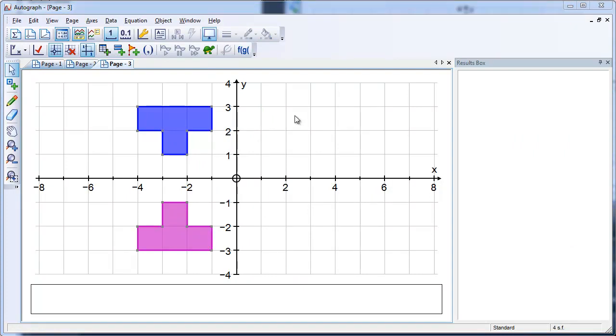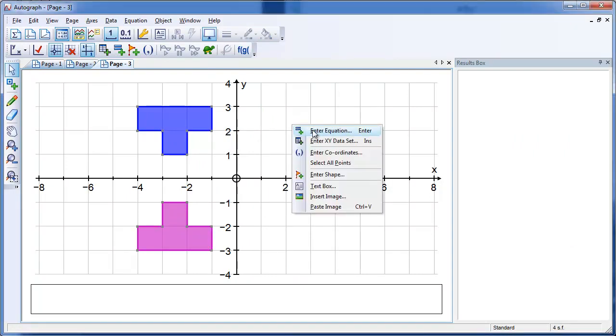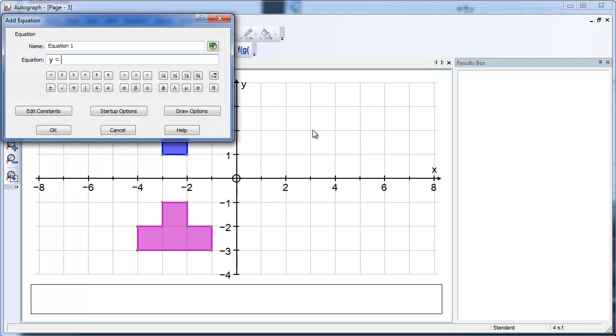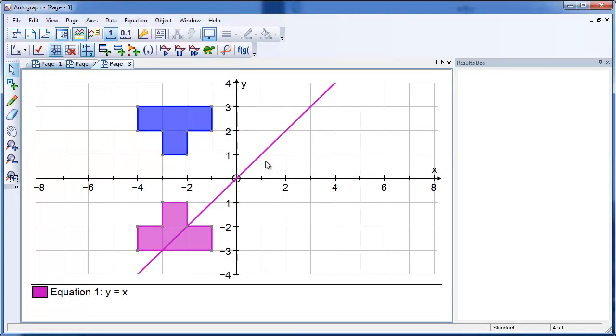Another consideration of equal aspect is if you have a graph say of Y equals X. Which should of course be at 45 degrees. But it will only be at 45 degrees if equal aspect is on.